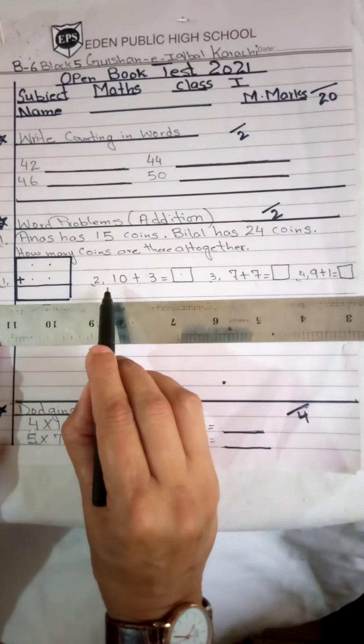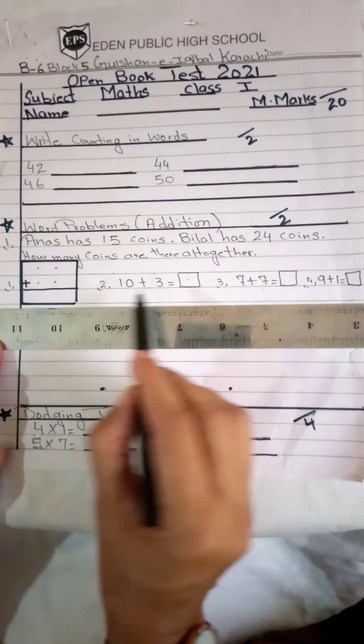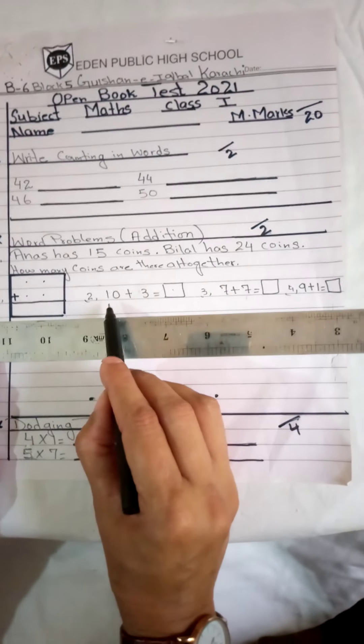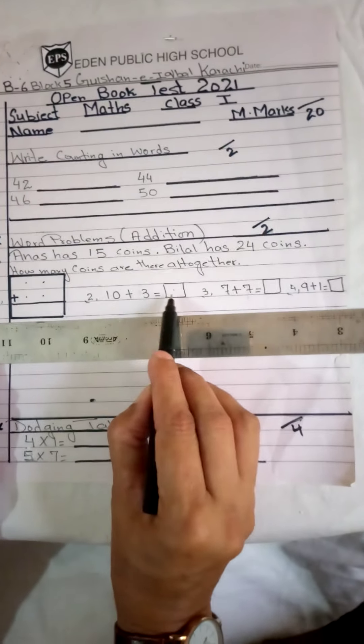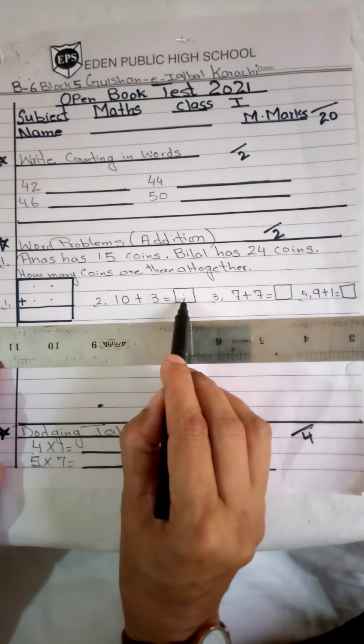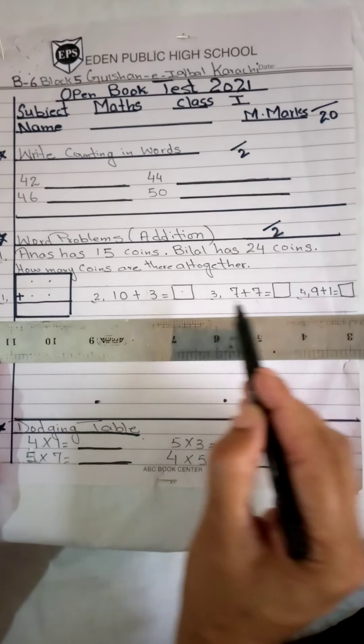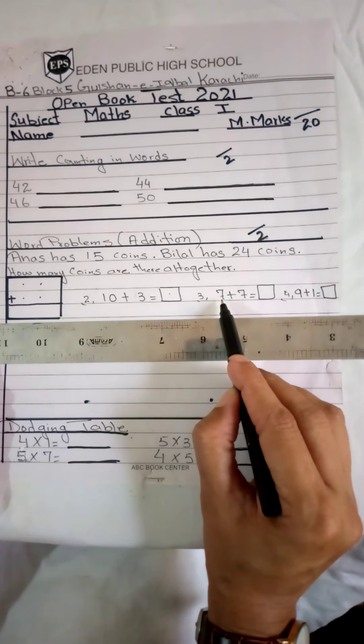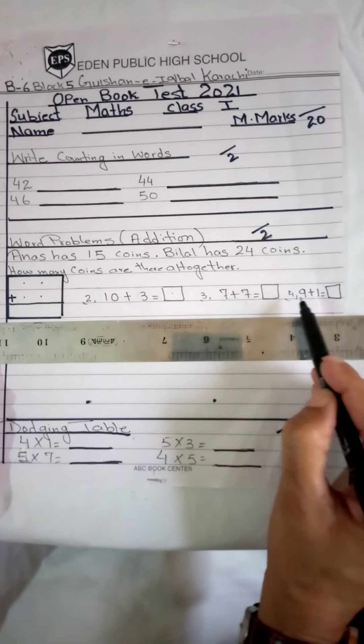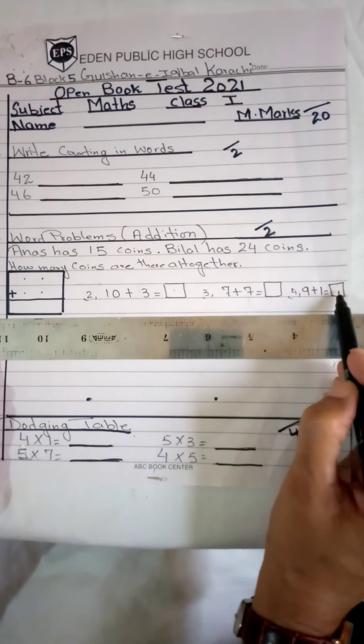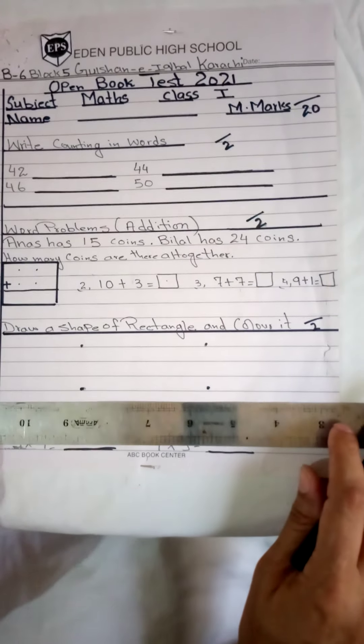After that, the teacher has given other sums by the other method. Okay, I have given you word problems sums. Sum number 2: 10 plus 3 is equal to, you will write the answer here. In this way, number 3: 7 plus 7, the same numbers. You will write the answer here. Number 4: 9 plus 1 is equal to.